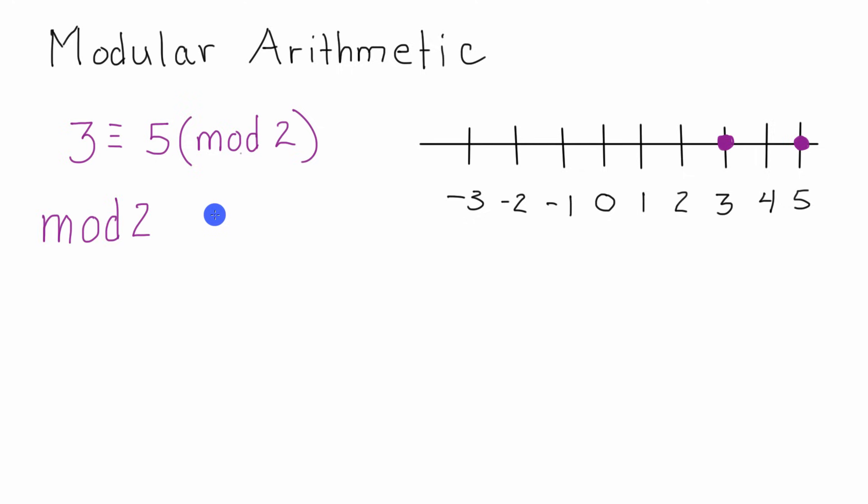If we were dealing with mod 3, we would have three values to work with, starting at 0, then 1, and going up to 2. 0, 1, and 2. Three values in mod 3. 0 and 1 gives us two values for mod 2.